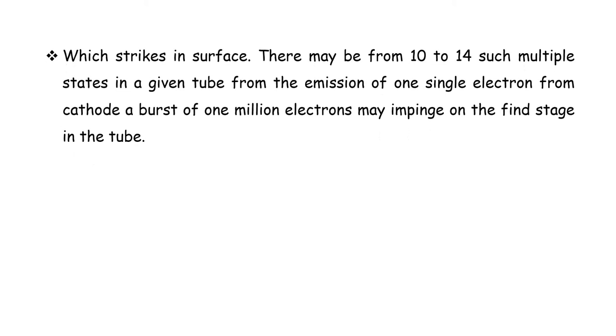It strikes the surface. There may be from 10 to 14 such multiple stages in a given tube. From the emission of one single electron from the cathode, a burst of one million electrons may impinge on the final stage in the tube.